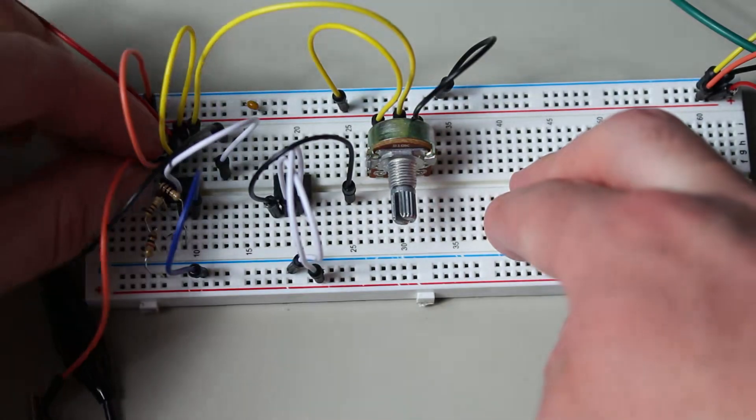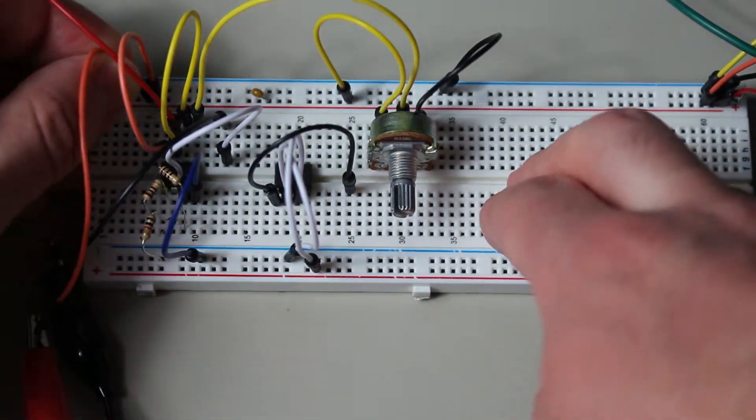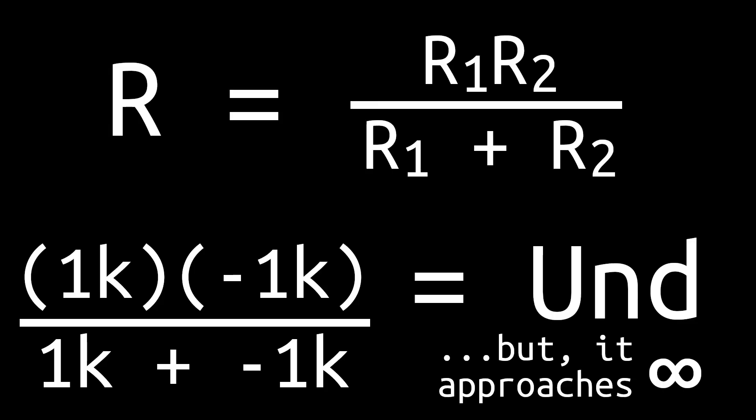This also works in the other direction by using parallel resistances. If we use the parallel resistor equation, we will get an undefined answer with a divided by zero. However, if we take the limit of this, we will get an infinite resistance.